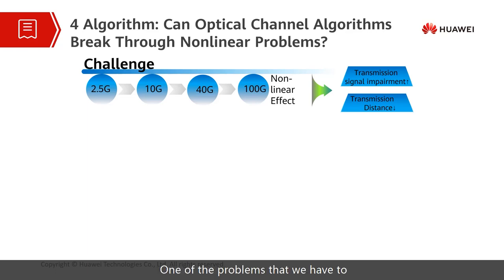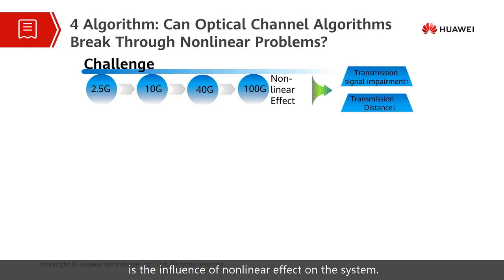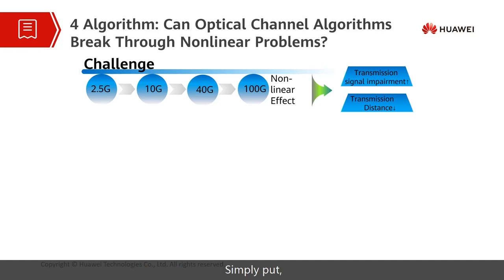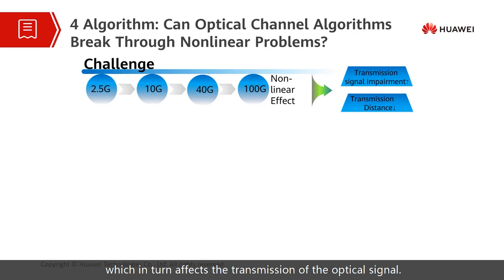One of the problems we have to face in hyper-speed systems is the interference of non-linear effects on the system. What are non-linear effects? Simply put, the optical signal transmission affects the optical fiber medium, which in turn affects the transmission of the optical signal.